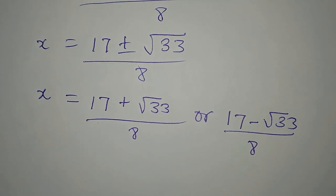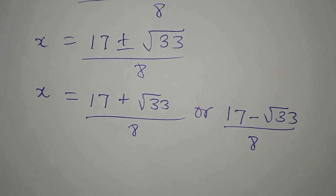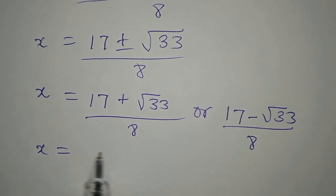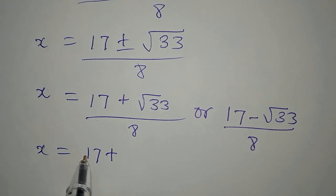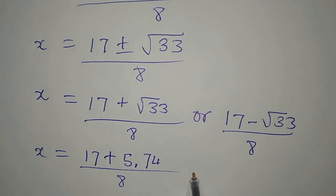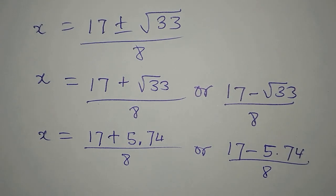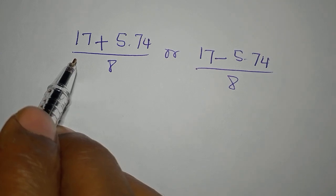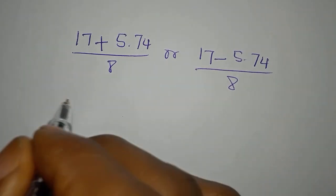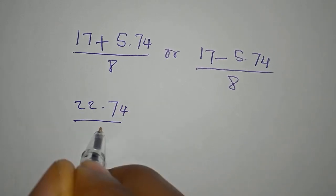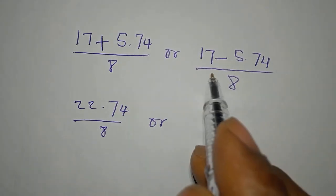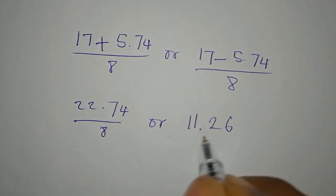Now let's try to get our answer in decimal form. From here x is equal to 17 plus square root of 33 is approximately 5.74, and that is over 8, or 17 minus 5.74 over 8. So if we add this together we have 22.74 over 8, or subtract this to get 11.26 over 8.